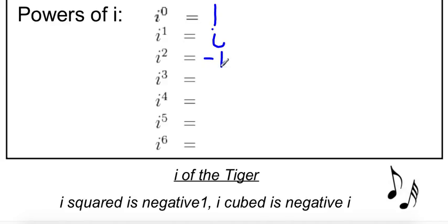When we get to i cubed, we can rewrite that. That's the same thing as i squared times i, just splitting it up. And i squared is negative 1, so we can replace that with negative 1. So i cubed is the same thing as negative i.